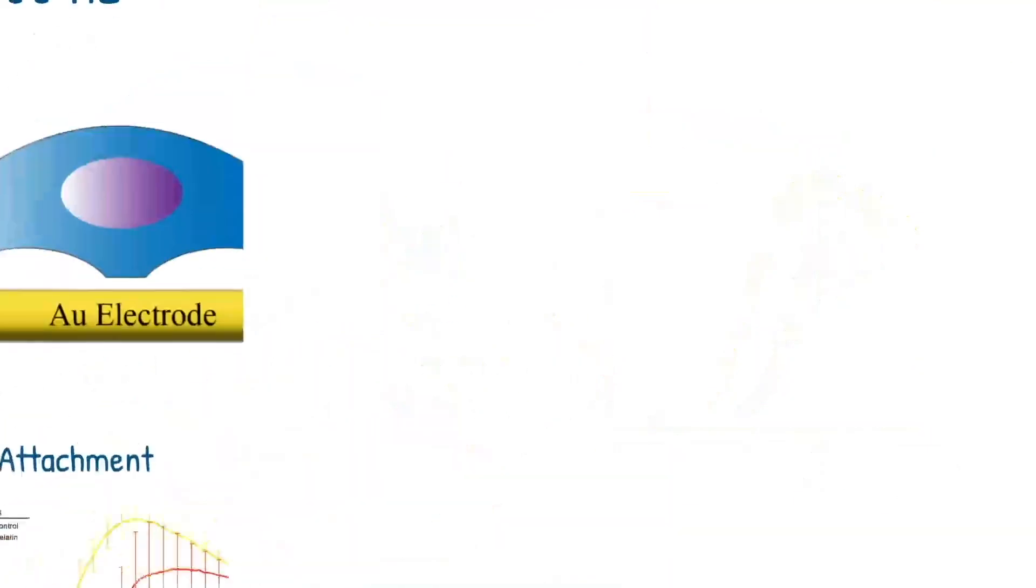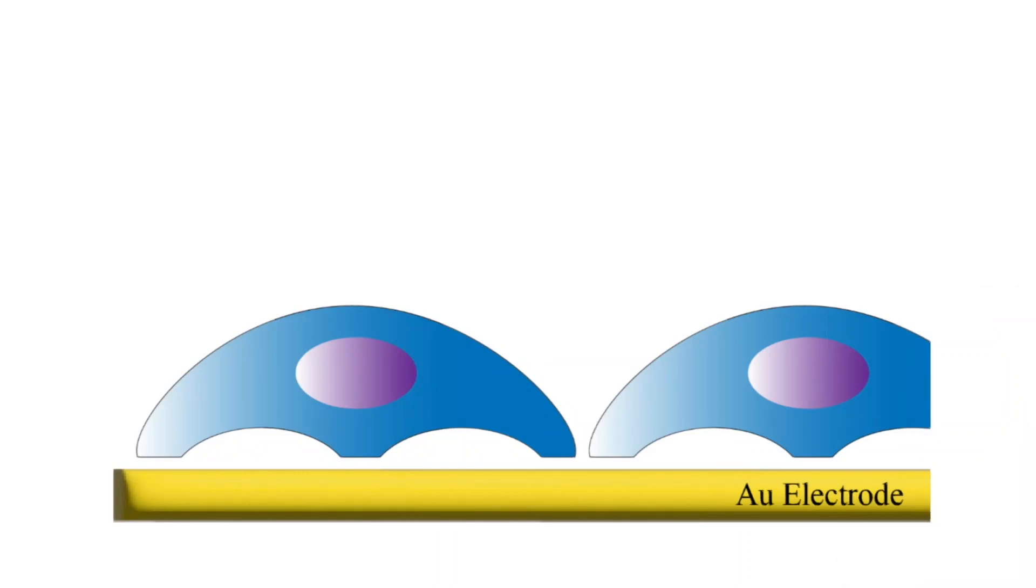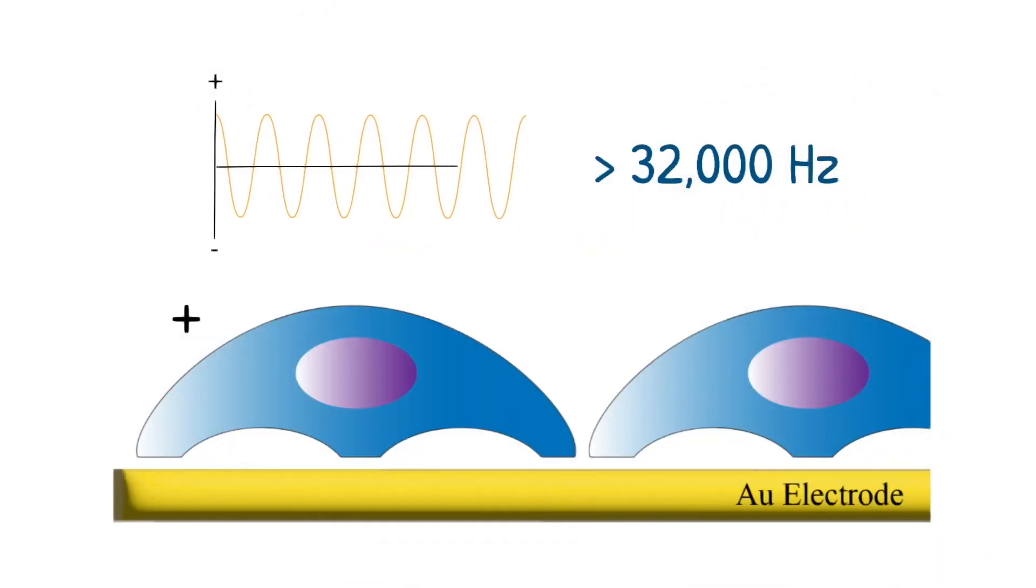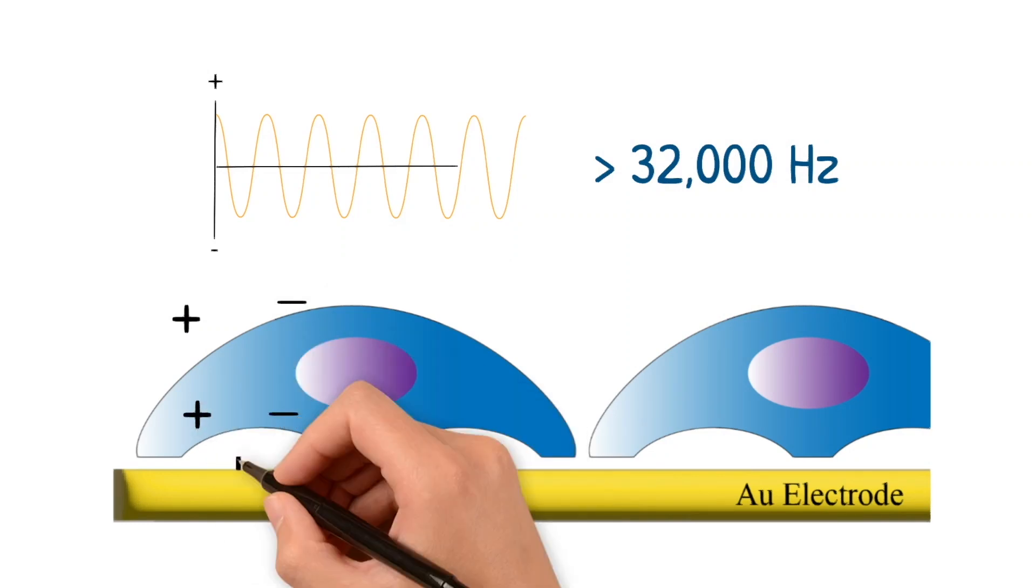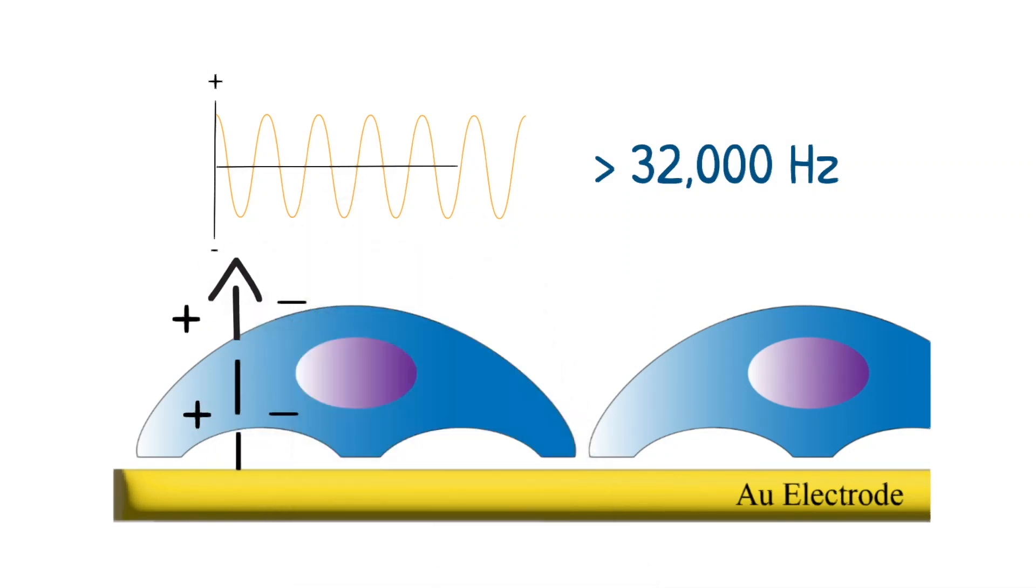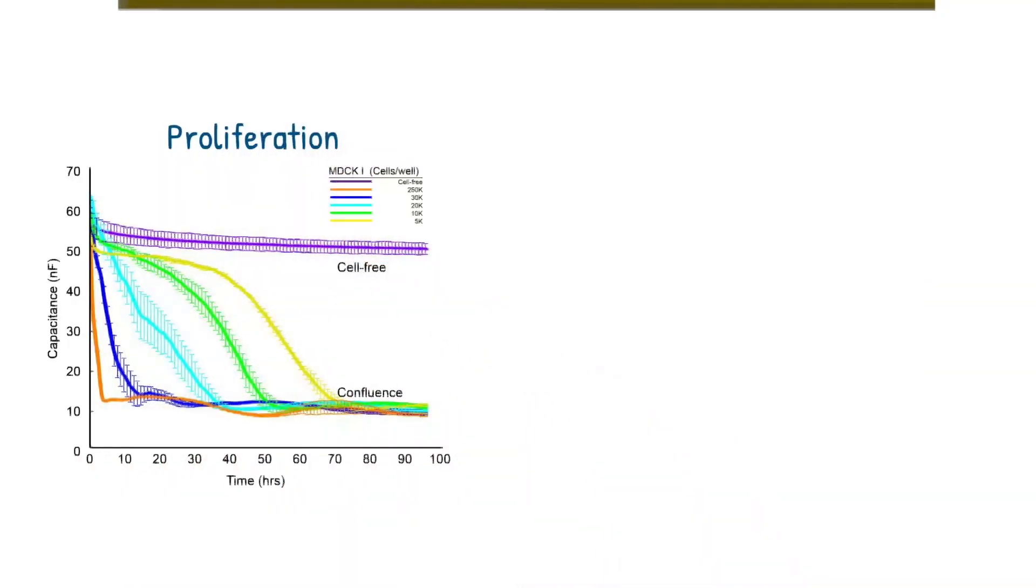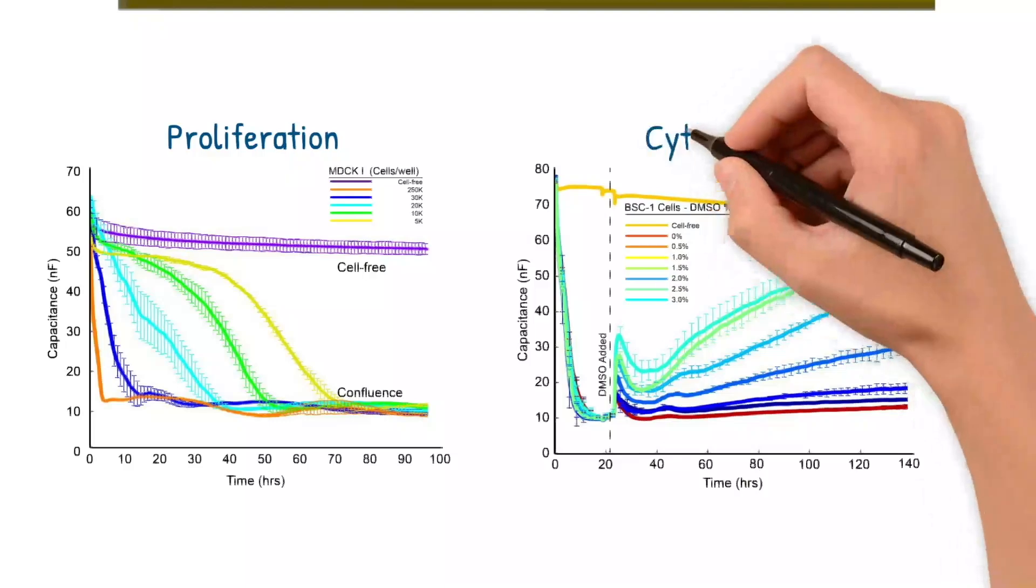But if we increase the AC frequency up above 32,000 Hz, charges build up around the cell membranes, making it easier for the current to capacitively couple through the membranes, as opposed to going around the cell, hence the capacitive pathway causing the majority of the impedance. This makes high AC frequency useful for measuring cell coverage assays, like proliferation rates or even cytotoxicity.